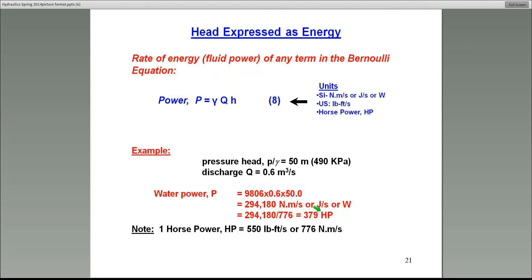For example, in the SI system, one horsepower represents 776 newton meter per second. So if you have energy in newton meter per second, it's usually a large number. Convert that to horsepower by dividing it with 776. The one in the U.S. unit is 550.